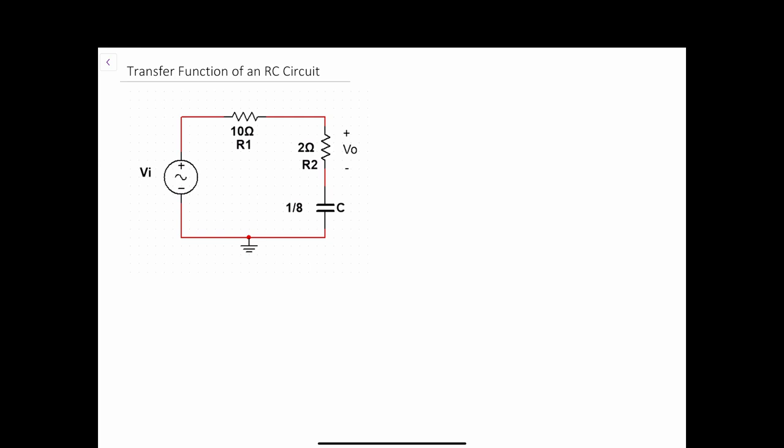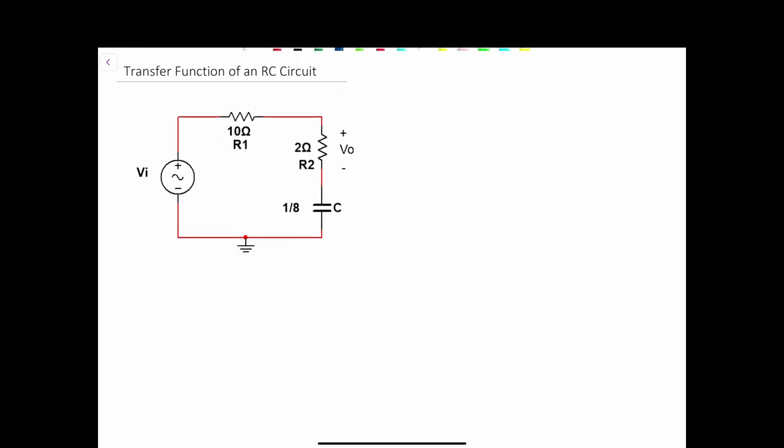We know that whenever we have a capacitor or an inductor in a circuit and we want to use algebraic equations to analyze the circuit, we have to go to the frequency domain. For the frequency domain, we can either be in the S domain, which is equal to the jω domain. So we know that S equals jω.